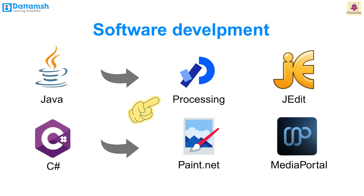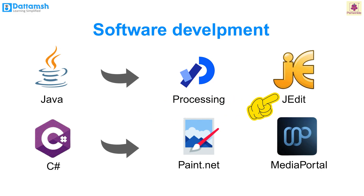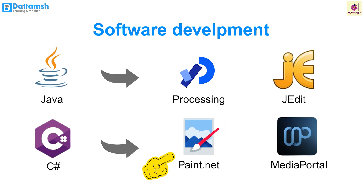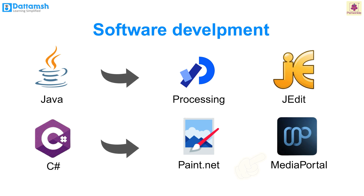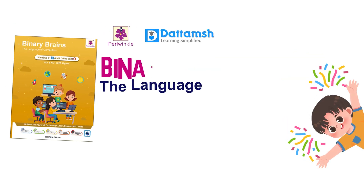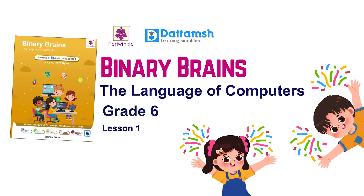For example, a program like Processing for drawing graphics and jEdit for text writing can be created with Java, while Paint.NET for drawing and Media Portal for music are built using C#. That's all for today, students — hope you had fun learning about programming languages and their fundamentals, styles, and different applications.